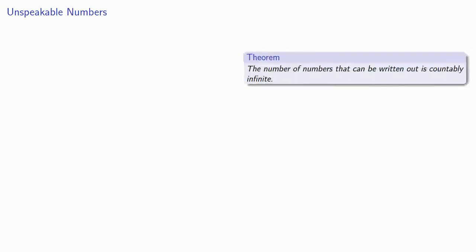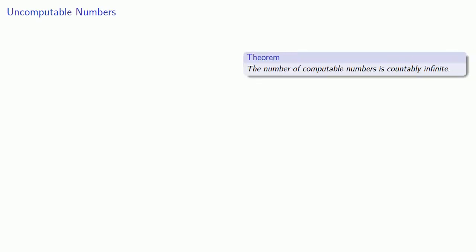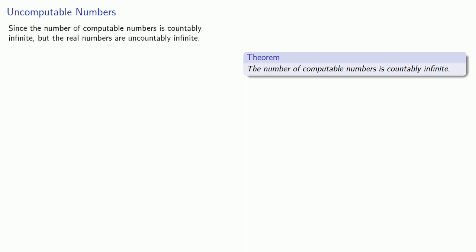Remember that we showed the number of numbers that can be written out is countably infinite. Since the number of numbers that can be written out is countably infinite, but the real numbers are uncountably infinite, this means there are real numbers that we cannot write out. We also showed that the number of computable numbers is countably infinite. Since the real numbers are uncountably infinite, it follows there are real numbers whose value cannot be computed.